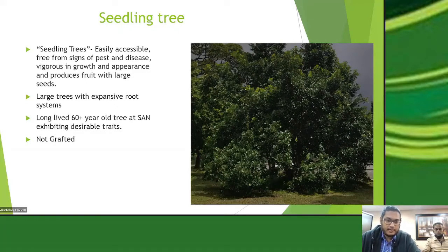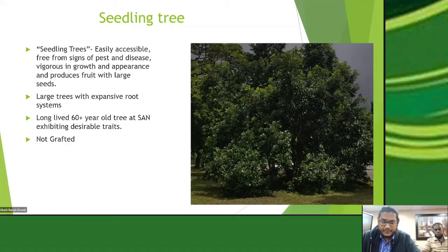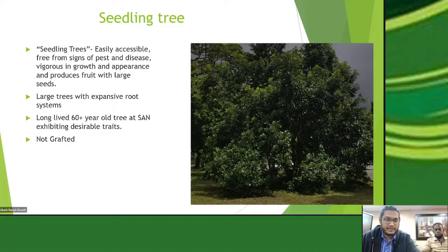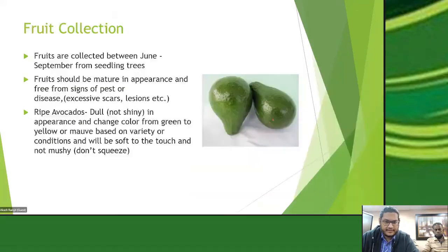These seedling trees are also selected because they have an expansive root system. Since avocados have a shallow root system, strengthening that root system benefits the grafted plant. We also want to select trees with a long life — the tree shown in this picture is one of the station's garden trees, believed to be over 60 years old, and it displays all the desired qualities. We will not take from a grafted tree. We collect fruits from June to September, and fruits should be mature in appearance with no signs of disease or pests.